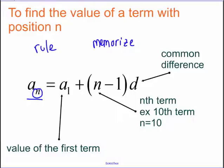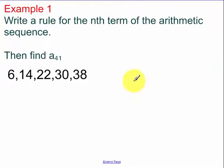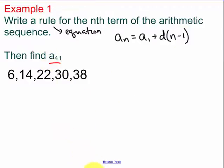So let's do some examples. In our first example, we're writing a rule, which is a fancy way of saying equation for the nth term of our arithmetic sequence. How am I getting to the next term? Here, I'm adding 8. And then just make sure you stay consistent, that my common difference is 8.